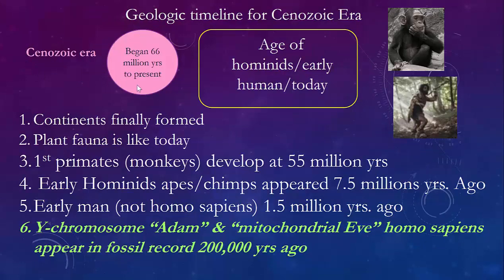Finally we get to the Cenozoic era, which began 66 million years ago and goes all the way to the present. Beginning 66 million years ago, the continents had now formed and were separated by seas — not just one big landmass. Plants were kind of like today. The first primates to show up were the monkeys, about 55 million years ago, then the apes and chimps about seven and a half million years ago. Then the earliest man — not Homo sapiens like we are — began about 1.5 million years ago.